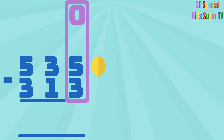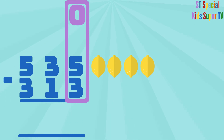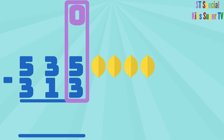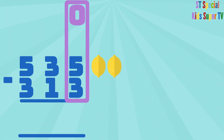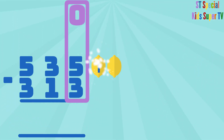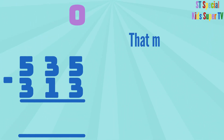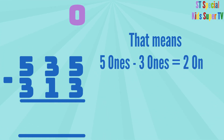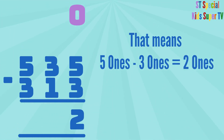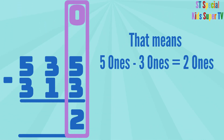1, 2, 3, 4, 5 lemons minus 1, 2, 3 lemons equals 1, 2 lemons. That means 5 ones minus 3 ones equals 2 ones. So we write the 2 under the ones column.